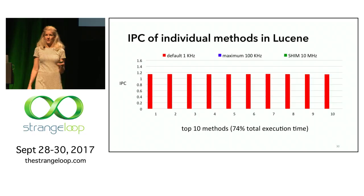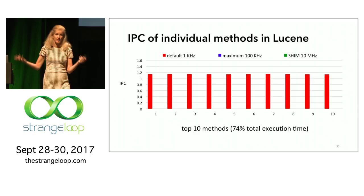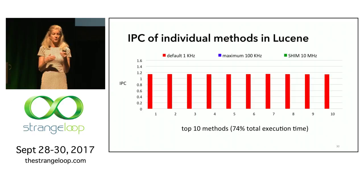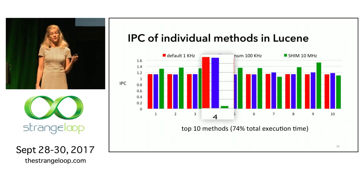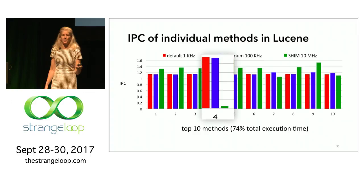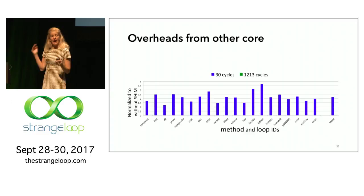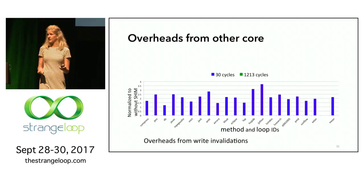Here's an example of how powerful this approach is. Using interrupt-driven sampling at even 100 Hz, you get a flat IPC across individual methods in Lucene — everything looks the same, the signal-to-noise ratio is too low. But if you sample with Shim at 10 megahertz, you get much more fine-grained knowledge about what's happening in your program. We can identify method number four as a real problem. Overheads are important: reading from another core at 30 cycles gives a factor-of-two overhead, but slowing down to reading every ~1,000 cycles makes this essentially non-interfering.